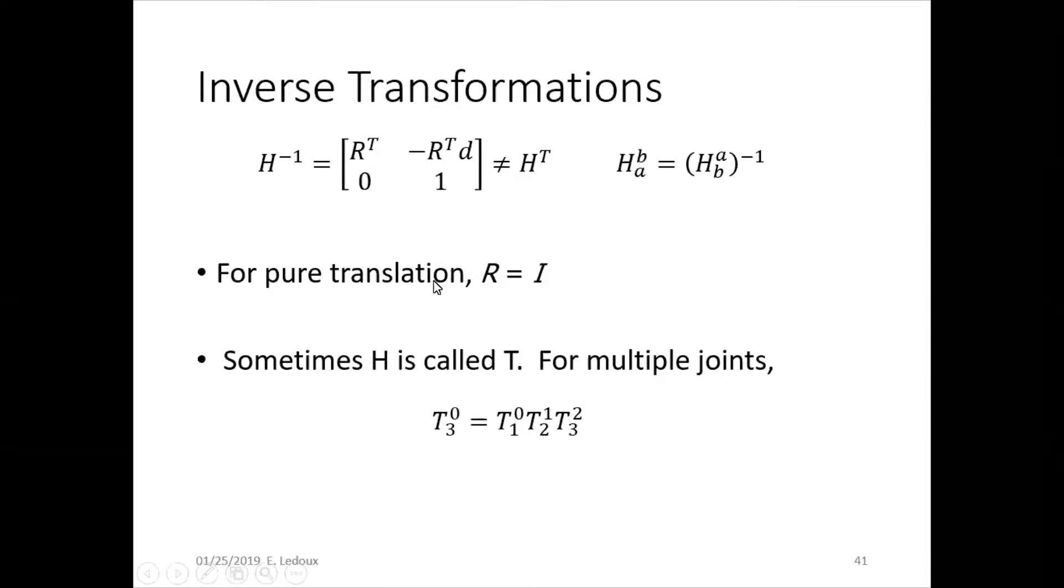For pure translation, R is just the identity matrix. That means x, y, z points in their original directions. Zeros along the main diagonal, ones in the other places.